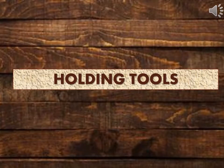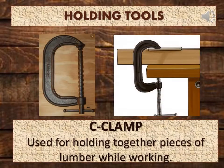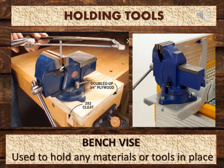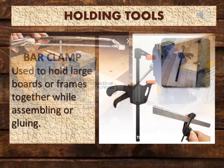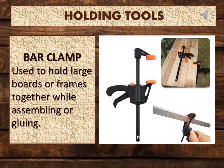Next are the holding tools. C-clamp: used for holding together pieces of lumber while working. Bench vise: used to hold any materials or tools in place. Bar clamp: used to hold large boards or frames together while assembling or gluing.